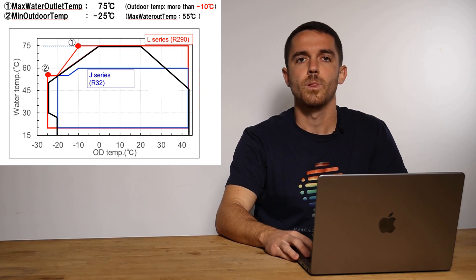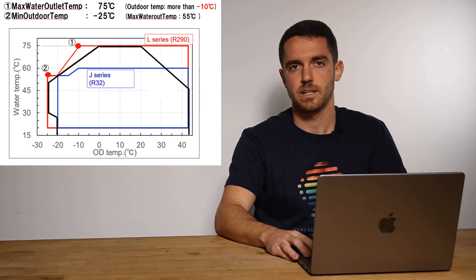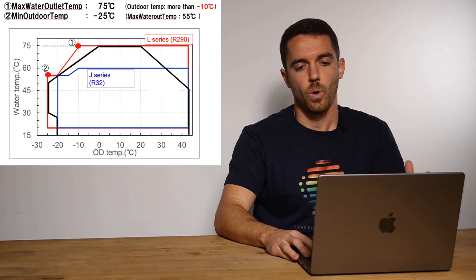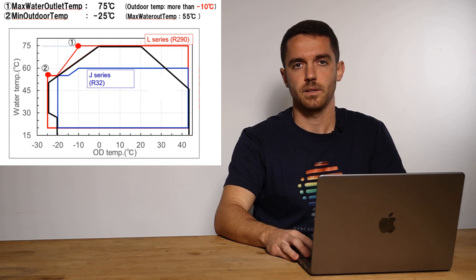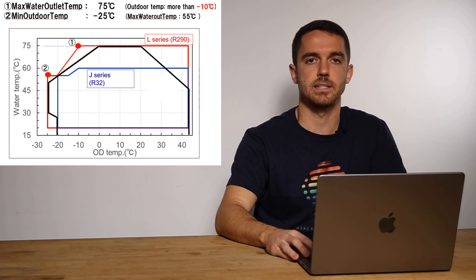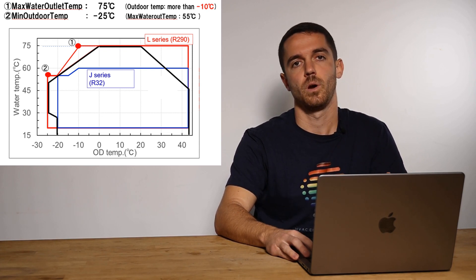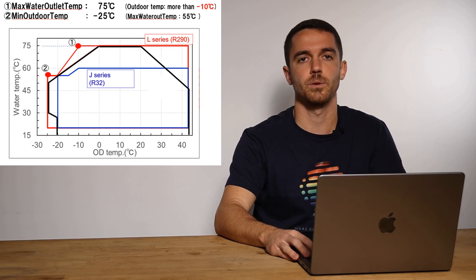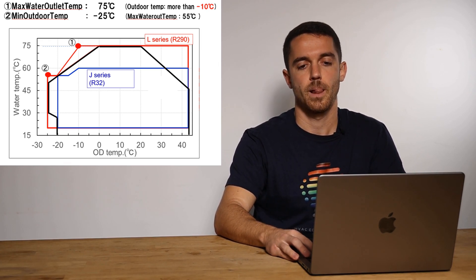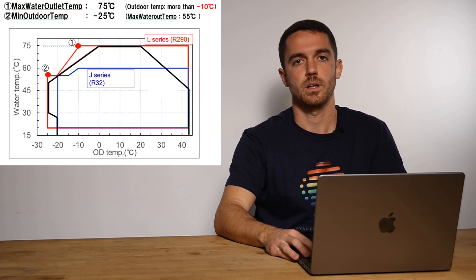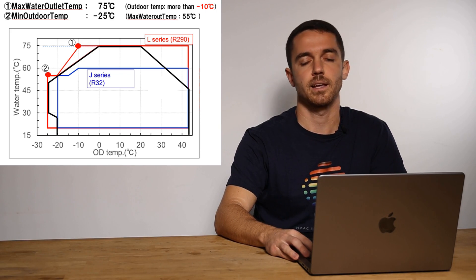So on R32 we can have around 60 degrees maximum flow temperature, maybe slightly higher. On R290, for example, Panasonic L generation, we can have 75 degrees water flow temperature when outdoor is minus 10. So in all range up to outdoor minus 10, we have 75 degrees. We can have this because critical point or critical temperature allows our refrigerant to condense at higher temperature.